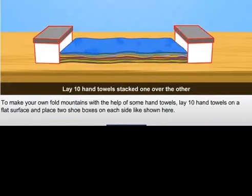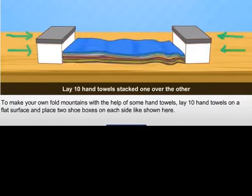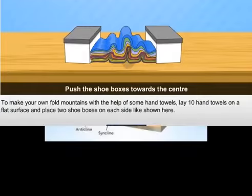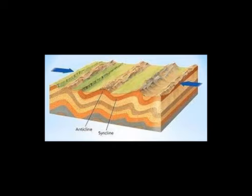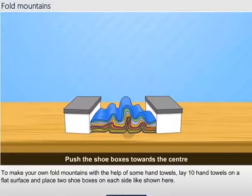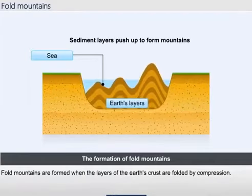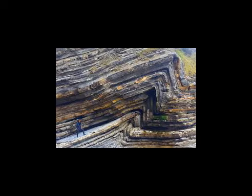Folding is simply the process whereby rock strata are bent up and down as a result of compressional forces in the earth's crust. This process is possible only when a landmass is subjected to compressional forces, thereby causing the landmass to squeeze up. They are usually visible in sedimentary rocks, and for this reason they are stratified or are in layers, as shown in the video.